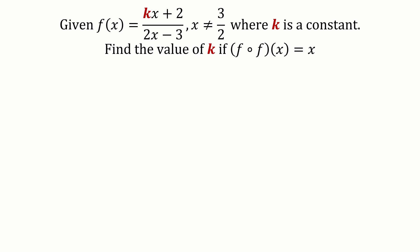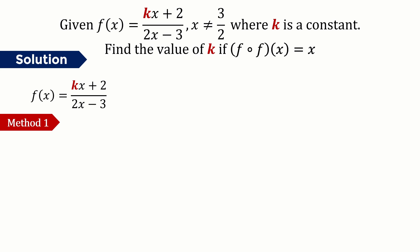Given the function f(x) = (kx + 2) / (2x - 3), where x ≠ 3/2 and k is a constant, the question is to find the value of k if f(f(x)) = x. To solve this question we have two methods, and here I will show both.